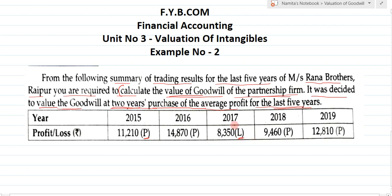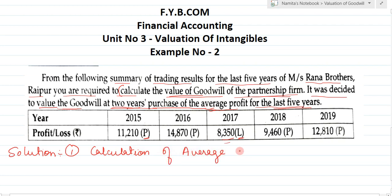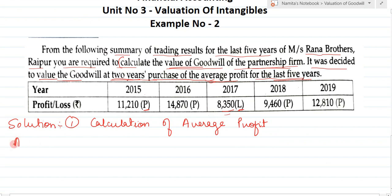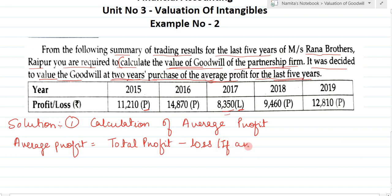Now the solution. First of all, for the valuation of goodwill we require the average profit. So we will calculate the average profit. The formula to calculate average profit is: average profit equals total profit less loss, if any, upon number of years.